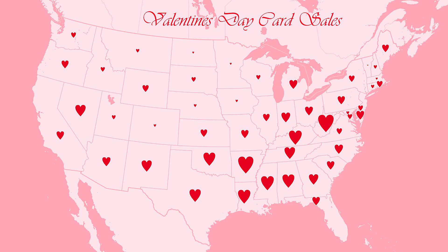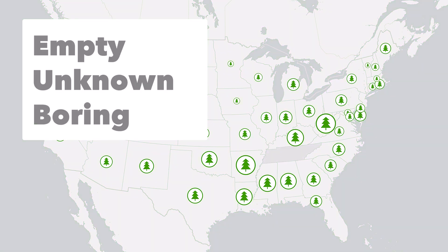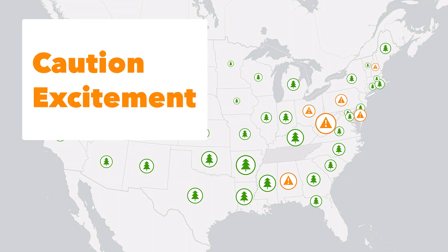Here are a few other colors that have strong connotations in cartography. Green signals good, healthy, and natural. Grey means empty, unknown, boring. And orange signals caution or excitement.